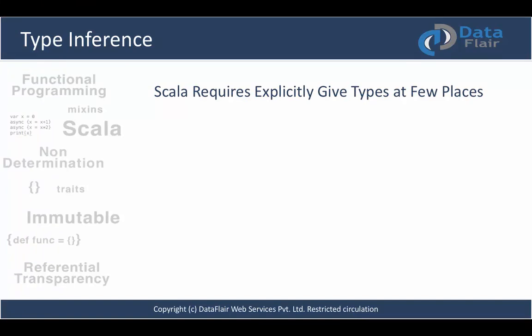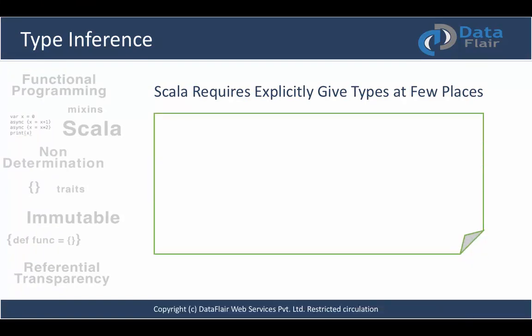There are some cases when you should explicitly give types. First, when defining class fields with no initial value. Suppose you are defining a User class with fields like first name and last name. It's better to either initialize those values or explicitly declare their type, because that will help the Scala compiler infer the type later in the program flow. If you are initializing those fields it's fine; if not, you should give them an explicit type.